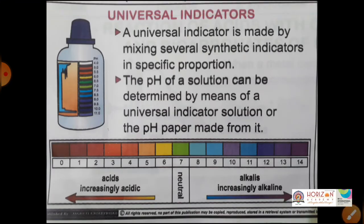Universal indicator is made by mixing several indicators in specific proportions. We have seen in the previous class indicators like litmus paper, methyl orange, methyl red, and natural indicators like china rose and turmeric. Those indicators show whether a solution is acidic or basic. The universal indicator is special because it can show whether it is a strong acid or weak acid, and exactly what pH value that acid has. The pH of a solution can be determined by universal indicator, which is in liquid form.